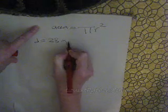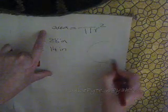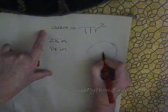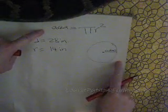The diameter is 28 inches. Radius is half that, 14 inches. Here's a circle. That's the radius. That's the radius. Distance from the center to the outside.